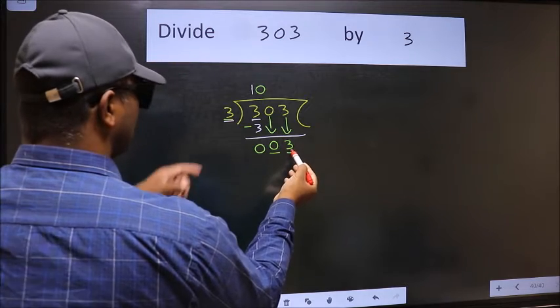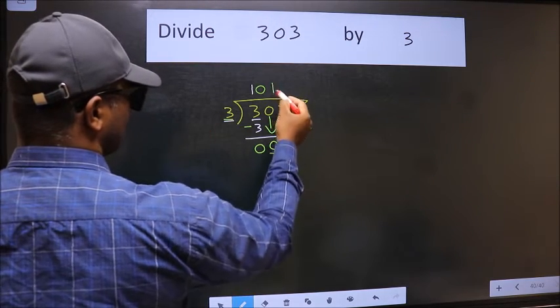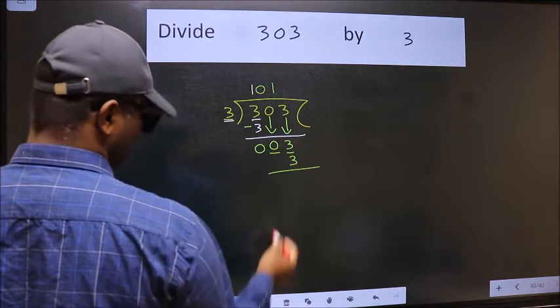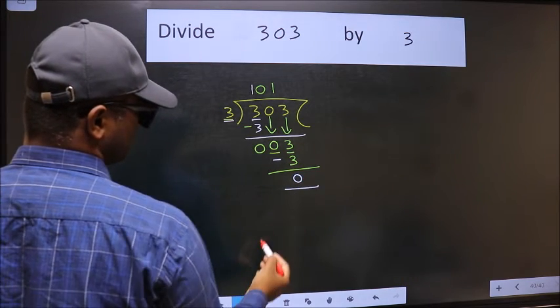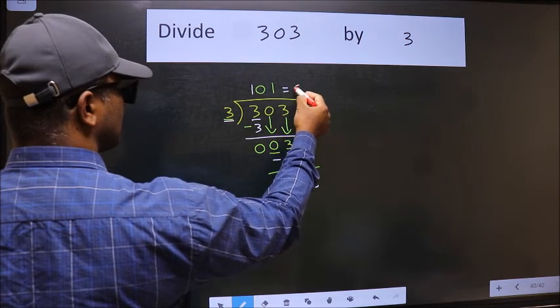Now 3. When do we get 3 in the 3 table? 3 once 3. Now we should subtract. We get 0. So this is our quotient.